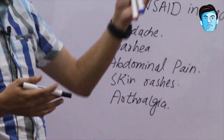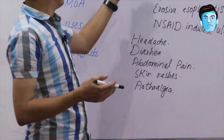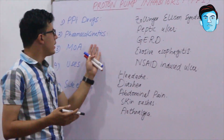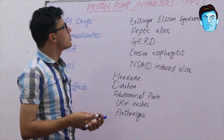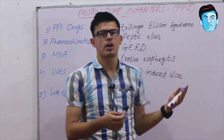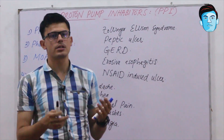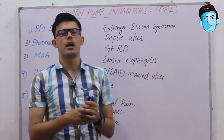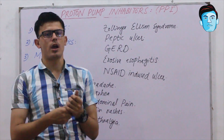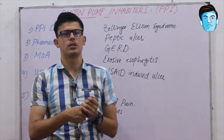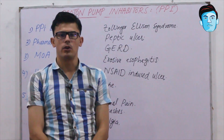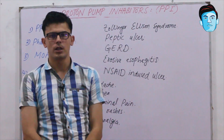So this is all about PPI drugs — their pharmacokinetics, mechanism of action, uses, and side effects. This is a very important and basic topic in pharmacology, and being a medical student you need a sound knowledge of this. Hopefully you found this lecture useful; kindly share and support us. Thank you.